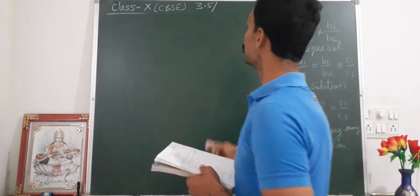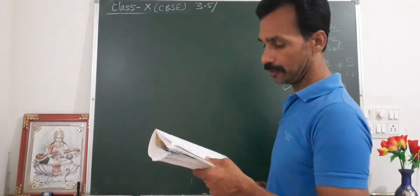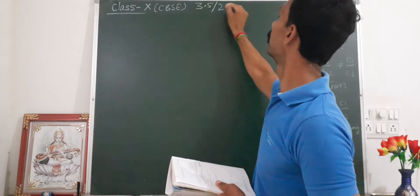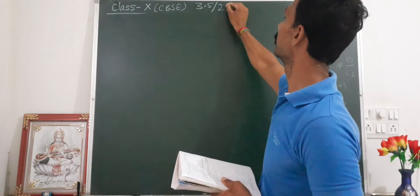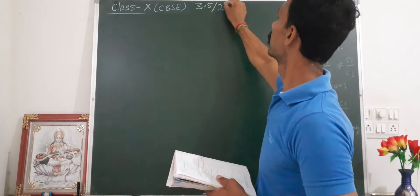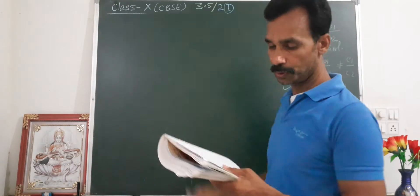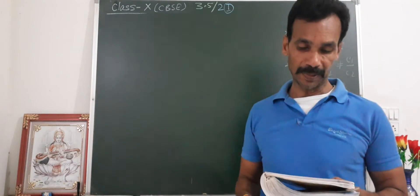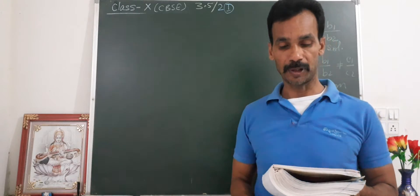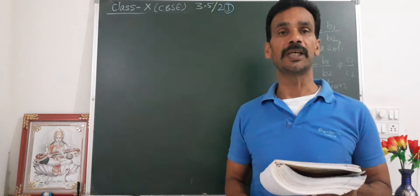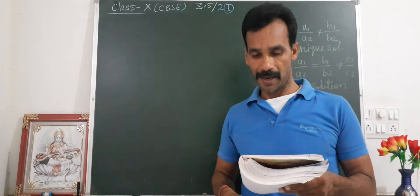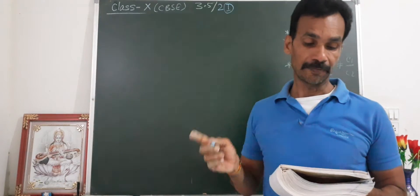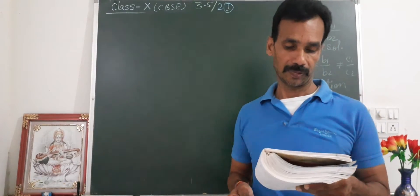Exercise 3.5, question number 2, first one. Question number 2 is: find which value of A and B does the following pair of linear equations have an infinitely many number of solutions.